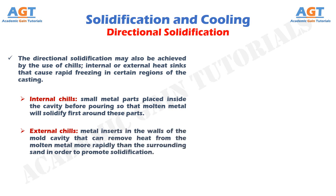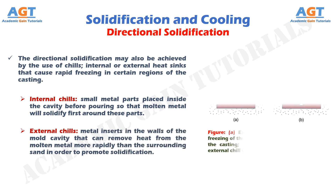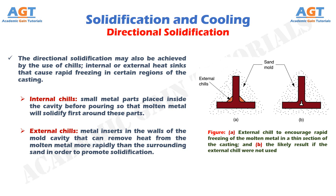External chills are metal inserts in the walls of the mold cavity that can remove heat from the molten metal more rapidly than the surrounding sand in order to promote solidification. Figure A shows an external chill to encourage rapid freezing of the molten metal in a thin section of the casting, and figure B shows the likely result if the external chill were not used.